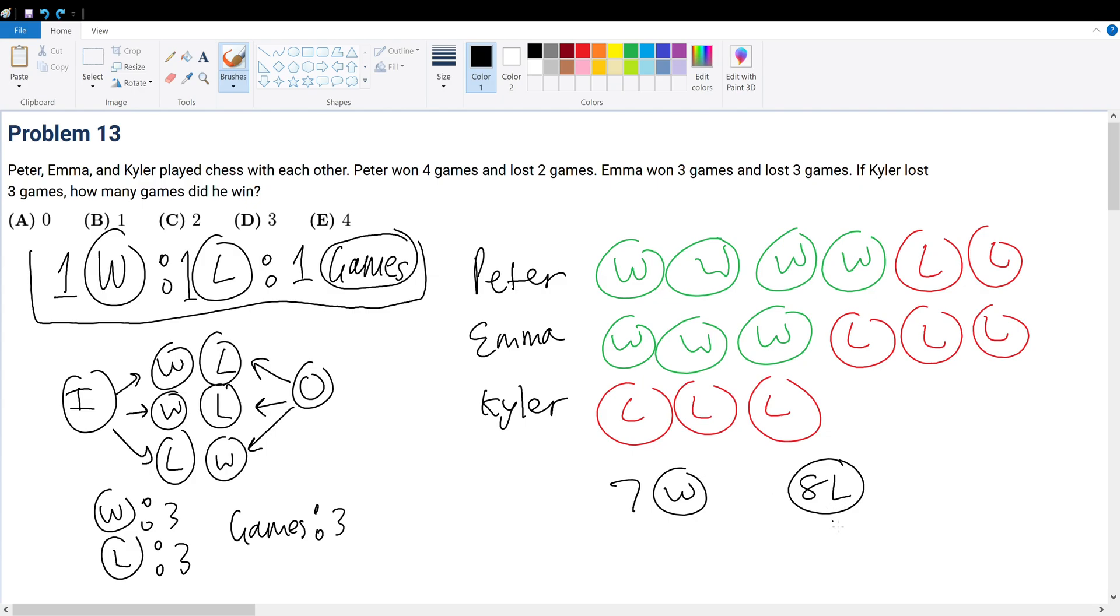We can only add a win. So we must add 1 win to Kyler. So we will add 1 win here. And that will give us 8 wins compared to 8 losses.